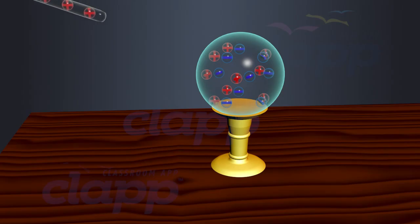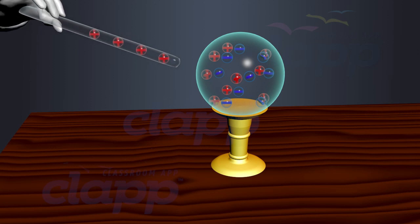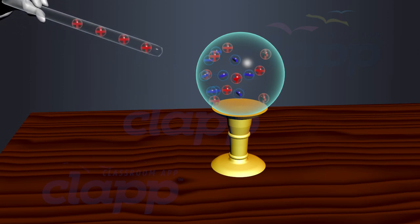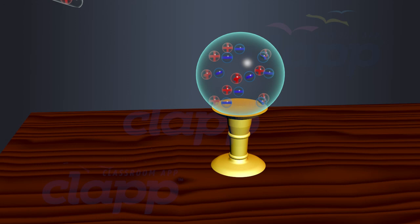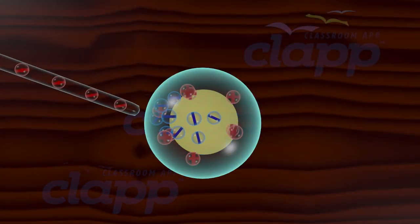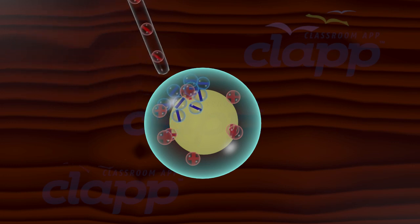When we bring a positively charged rod near the metallic sphere, the electrons in the metallic sphere move towards the positively charged rod, as positive charges attract electrons.